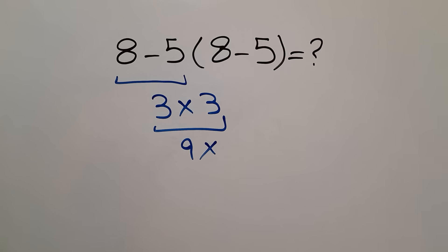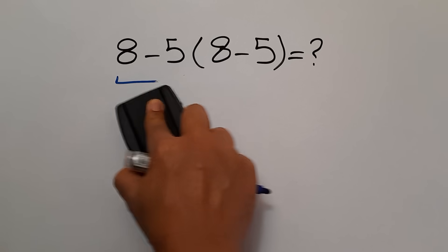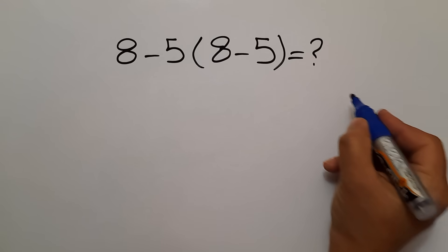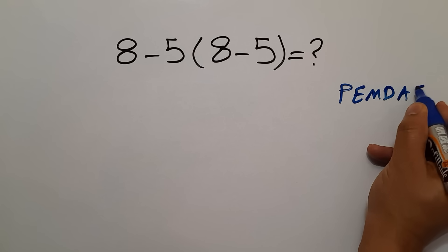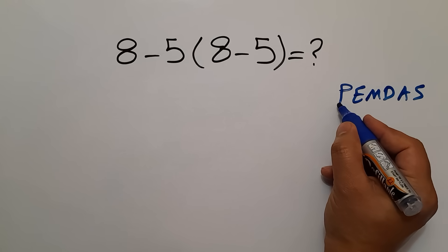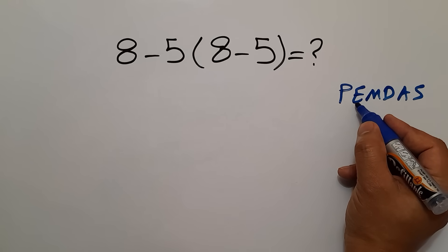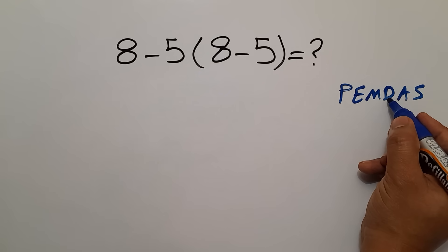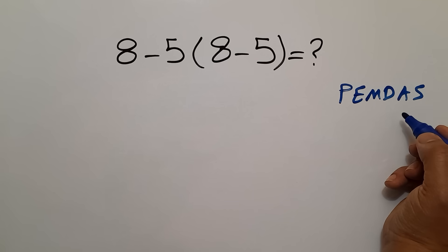But this answer is not correct. Because, according to the order of operations, which is PEMDAS: P stands for parentheses, E stands for exponents, M and D stands for multiplication and division, and A and S stands for addition and subtraction.